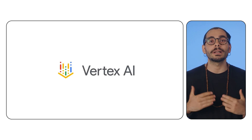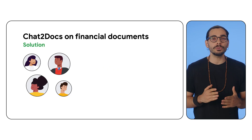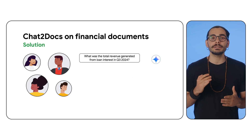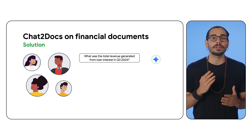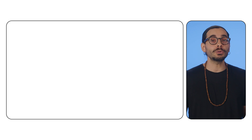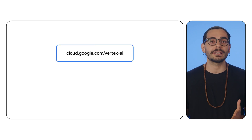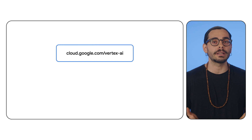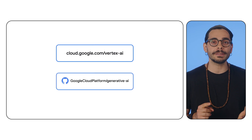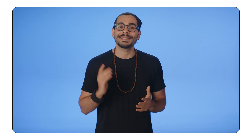Vertex AI gives you an end-to-end platform to tune your embeddings at scale, so your Chat2Docs application can better tackle those complex financial questions and deliver accurate, insightful responses. If you want to know more, check out cloud.google.com/vertexai for comprehensive documentation and explore our code samples on GitHub at GoogleCloudPlatform/generative-ai. Start tuning your embeddings to improve your Generative AI application on Vertex AI.